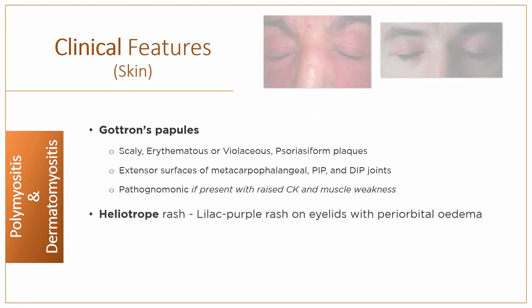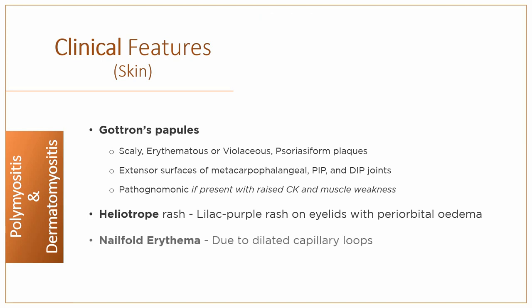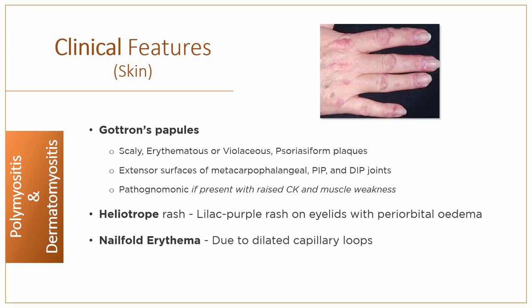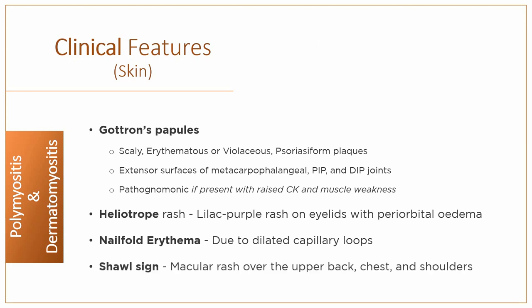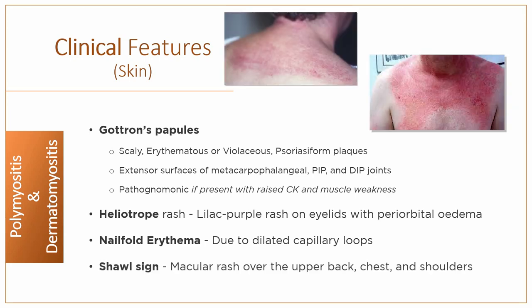Heliotrope rash is a lilac-purple rash on the eyelids in combination with periorbital edema. Nail fold erythema is common due to dilated capillary loops. Shawl sign is a macular rash in a shawl-like distribution over the upper back, chest and shoulders.